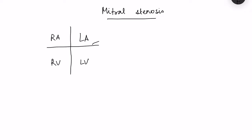The mitral valve is a bicuspid valve located between the left atrium and left ventricle. When we talk about mitral stenosis, it is basically narrowing of the valve, so the valve orifice becomes narrow and the opening decreases. The normal opening of the mitral valve is 4 to 6 centimeters square.